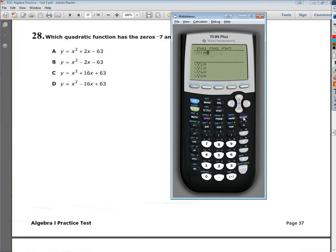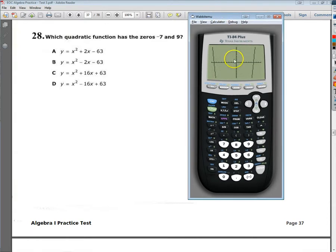And I just start graphing things. I'm going to see x squared plus 2x minus 63. So x squared plus 2x minus 63. I'm going to graph it. And I can count and see that it doesn't cross at negative 7. 1, 2, 3, 4, 5, 6, 7, 8, 9. So it does not cross at negative 9.